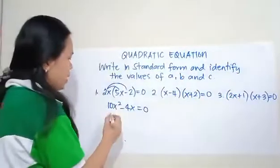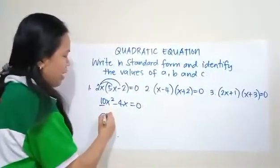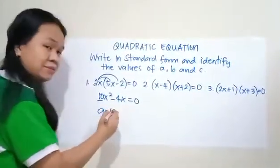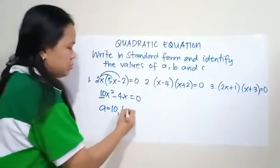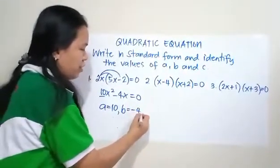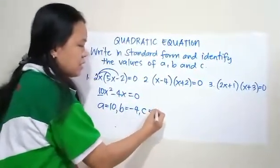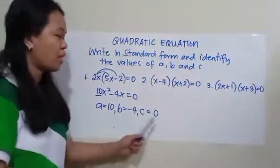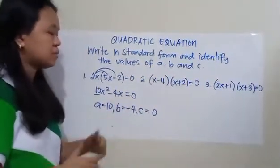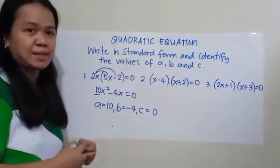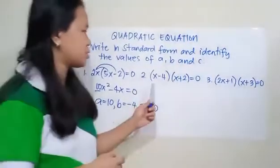B, and C. So in this equation, the value of A is 10, the value of B is negative 4, and the value of C is 0. So why is 0? Because the constant term is missing. Let's go to number 2.